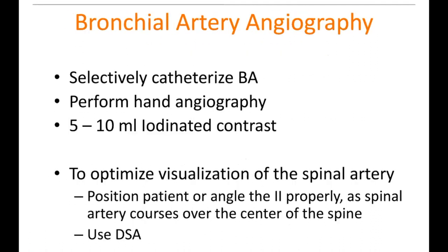Once you selectively catheterize the bronchial arteries and think you're in there, perform hand angiography — you can't use power injection, as these are very small vessels. Use about five to ten milliliters of iodinated contrast; you may only need about three. Gently perform a digital subtraction angiogram, and remember the spinal artery courses over the center of the spine.